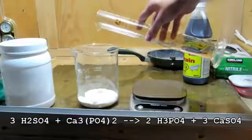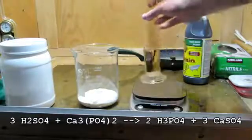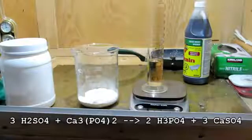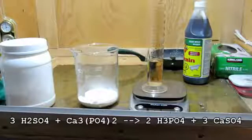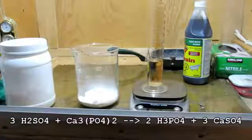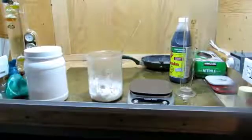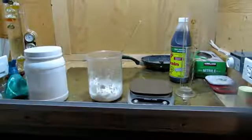So, as you can see by the addition of the sulfuric acid to the calcium phosphate, this reaction is very exothermic, as can be seen by the fumes. So, we'll mix this thoroughly, add some extra water to dissolve the phosphoric acid, and then we'll go ahead and filter the calcium sulfate.